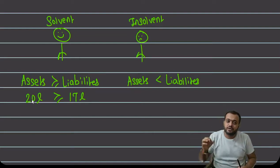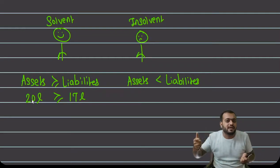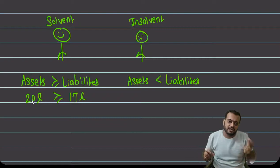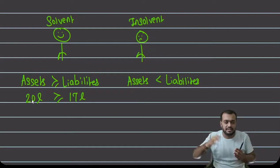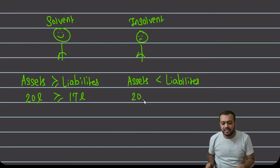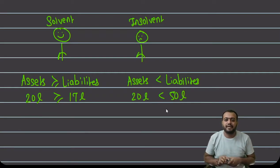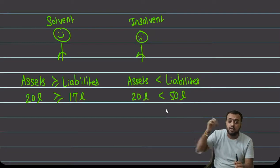इसका मतलब यह नहीं कि आज के आज पूरी liability pay कर पाए — अम्बानी को भी बोलो ना आज के आज पूरी liability pay कर दो, तो शायद वो भी न कर पाएं, क्योंकि कोई cash लेकर बैठा नहीं है। लेकिन capacity है कि future में repay कर पाएंगे। So if overall our assets are more than liabilities, मतलब हम liabilities pay करने के capable हैं — मतलब हम solvent person हैं। And in the insolvent case: suppose 20 lakhs के assets हैं और total liabilities हैं 50 lakhs की — तो पूरी property auction भी कर लो, 50 lakhs नहीं आने वाले।